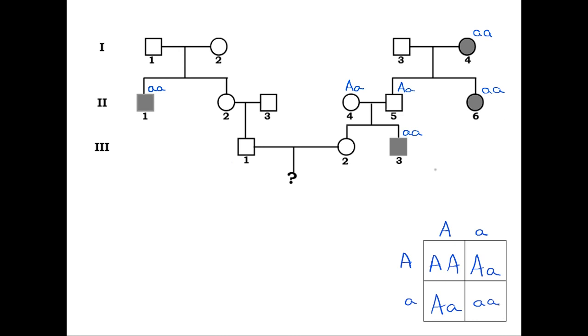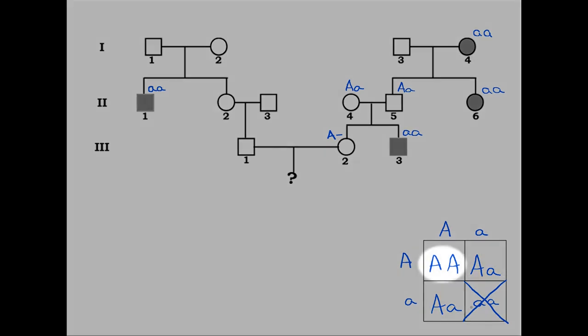Since the woman herself is not affected, she cannot be aa, and must be either AA or Aa. We note this as A-. Among those who are A-, two-thirds are Aa, and one-third are AA, as we can see in a Punnett square involving two heterozygous parents.